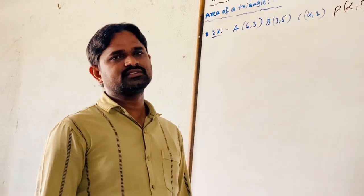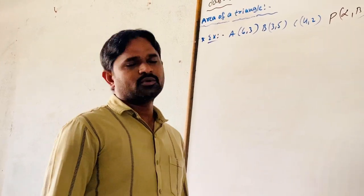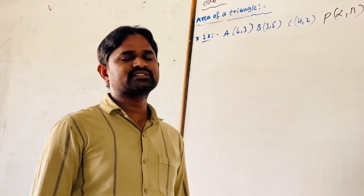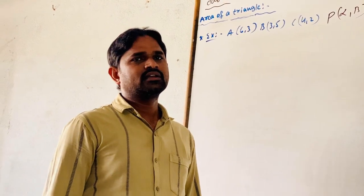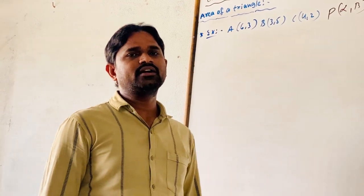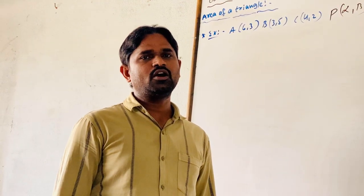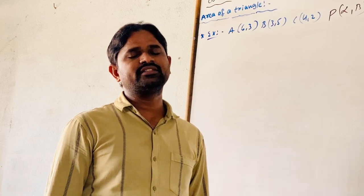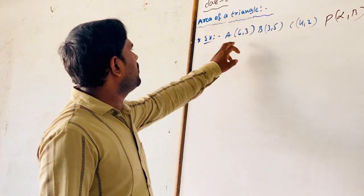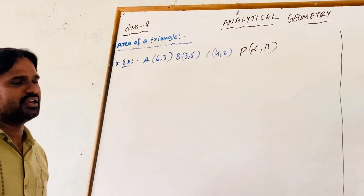Welcome to SSV AET classes. We are going to discuss analytical geometry, eighth class. In the previous class, we discussed the area of a triangle and area of a quadrilateral, and if the centroid is known, how many parts it divides the triangle into. We have an example to find the area of a triangle.